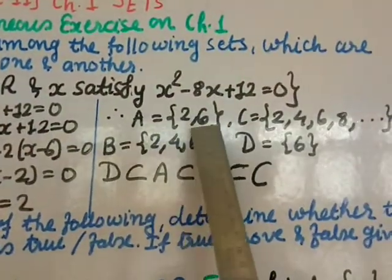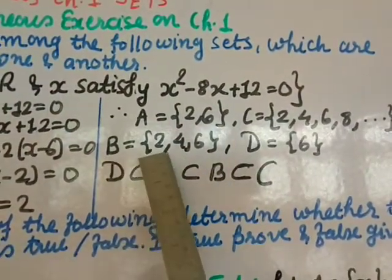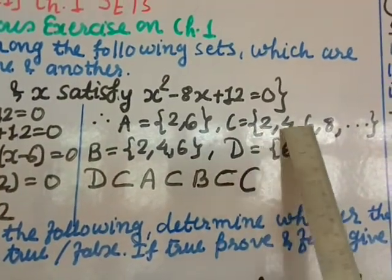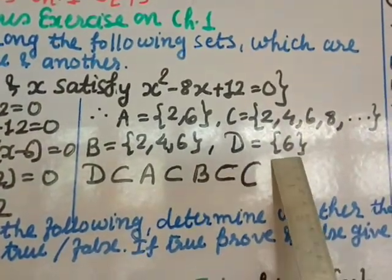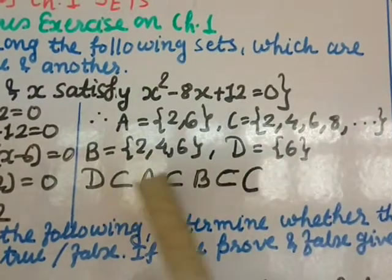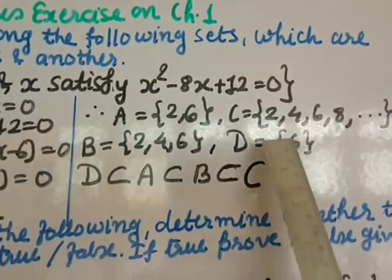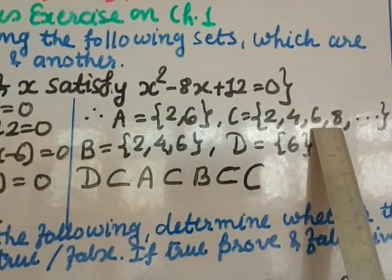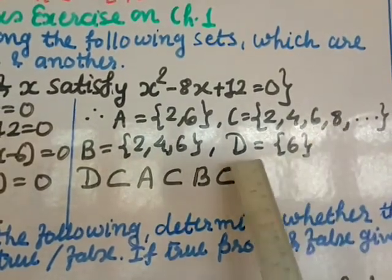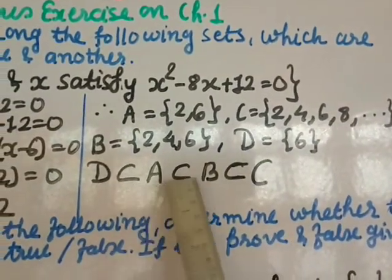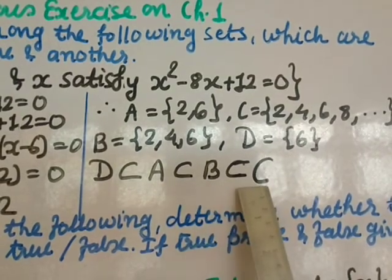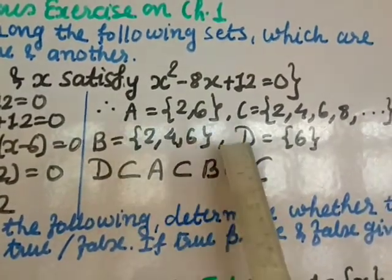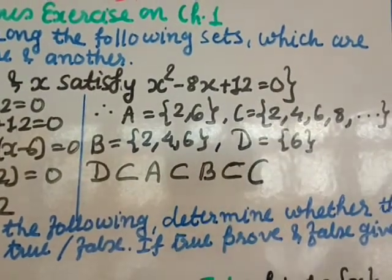We have A = {2, 6}, B = {2, 4, 6}, C = {2, 4, 6, 8}, and D = {6}. The smallest set is D, and the element 6 is part of sets A, B, and C. So D is a subset of A, D is a subset of B, and D is a subset of C.